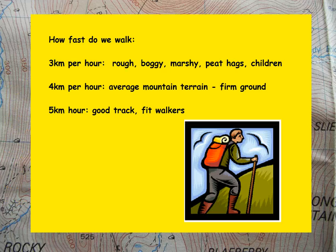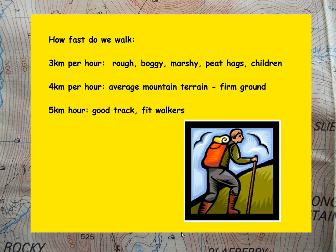So we walk at approximately 4km per hour on firm ground. However, we may slow down to 3km per hour on rough or boggy ground, and we may speed up to 5km per hour on good ground.